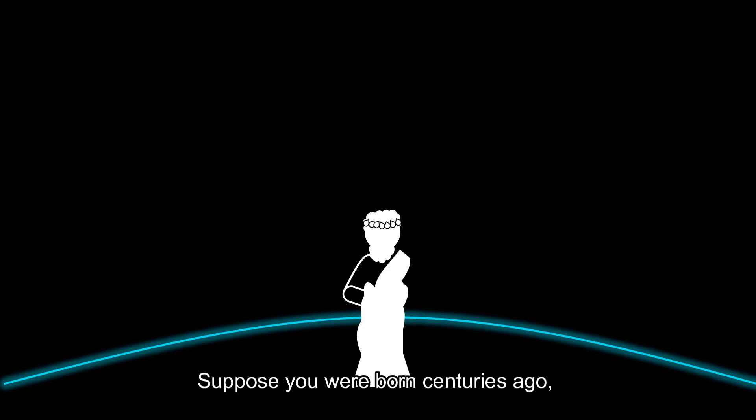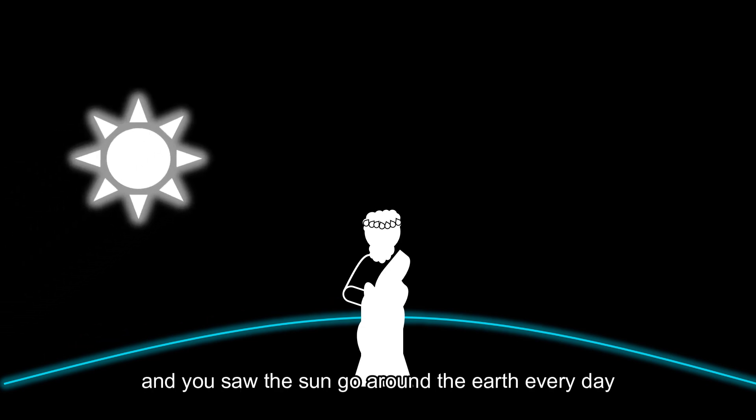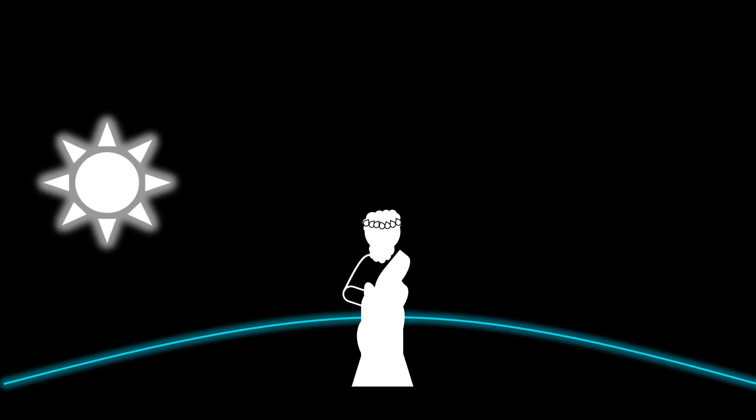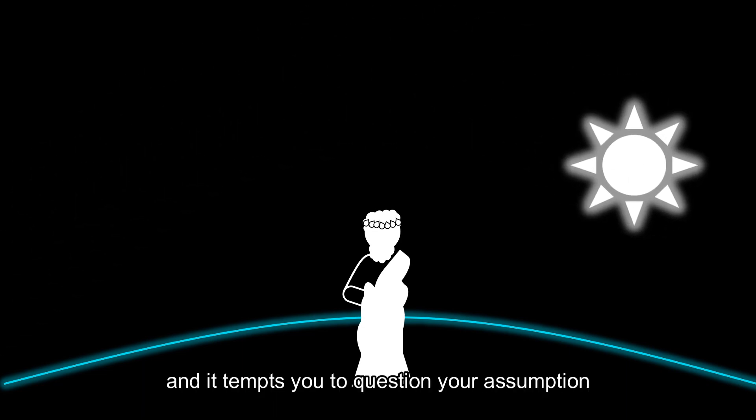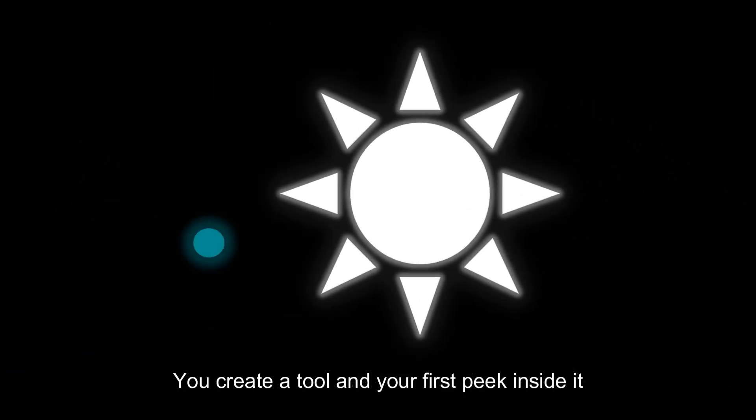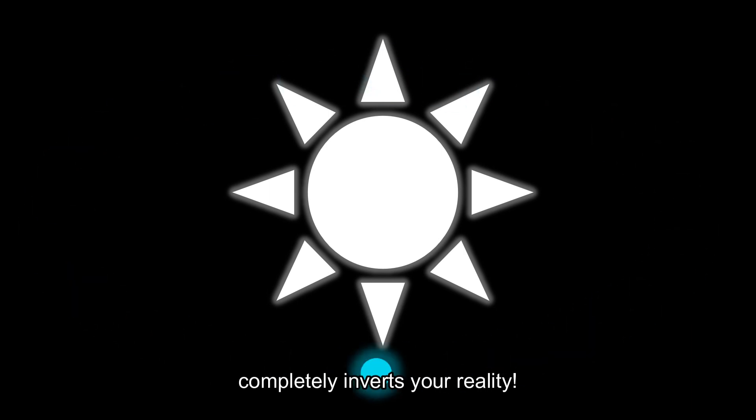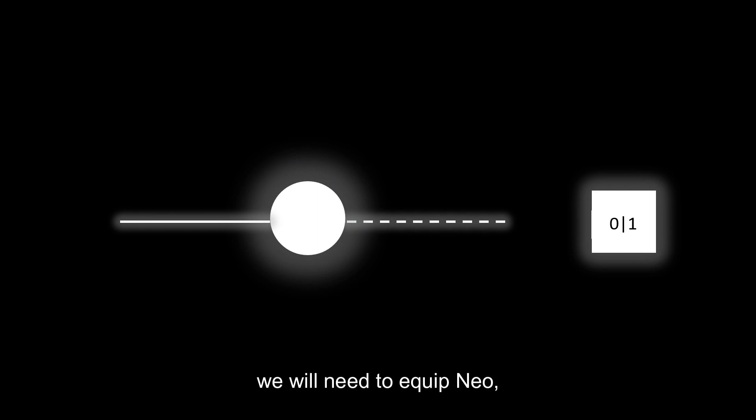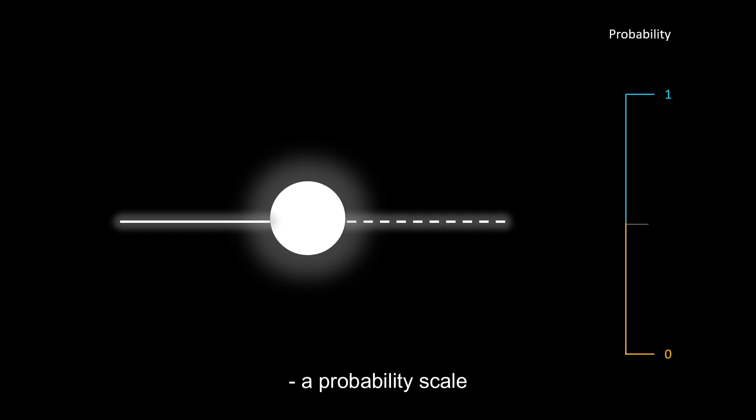Suppose you were born centuries ago, and you saw the sun go around the Earth every day. This made you 100% confident that Earth was the center of our solar system. But then, a little doubt trickles in, and it tempts you to question your assumption. You create a tool, and your first peek inside it completely inverts your reality. Therefore, rather than an arrogant yes or no, we need to equip Neo with an uncertainty scale, that is a probability scale.